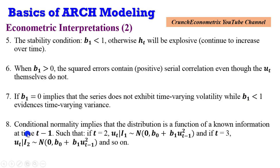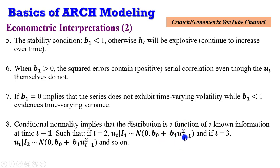Conditional normality implies that the distribution is a function of known information at time t-minus-1, such that in period 2, the error term is conditional on information obtained in period 1 — that is, year 1. It is normally distributed with a mean of 0 and a variance constructed as beta-naught plus beta-1 and the squared error of the one lagged period.